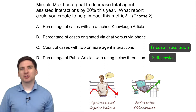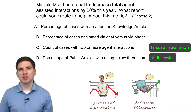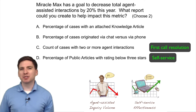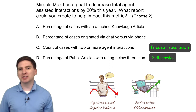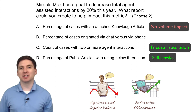The other two answers are incorrect because they do not show actionable data that could directly drive agent interaction metrics. The percentage of cases with an attached knowledge article indicates adoption of the knowledge base and how often agents are finding relevant knowledge, but a change in that percentage doesn't necessarily indicate anything good or bad about the total volume of agent-assisted interactions.